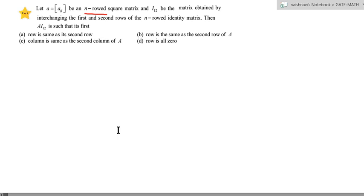Second problem. Let A equal to [aij] be an n-rowed square matrix and I12 be the matrix obtained by interchanging the first and second rows of n-rowed identity matrix. Then AI12 is such that its first: Option A: row is same as its second row. Option B: row is the same as the second row of A. Option C: column is same as the second column of A. Option D: row is all zero.